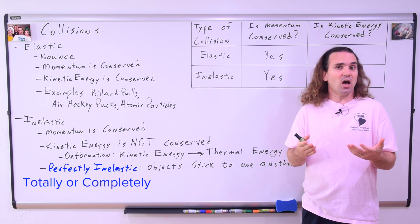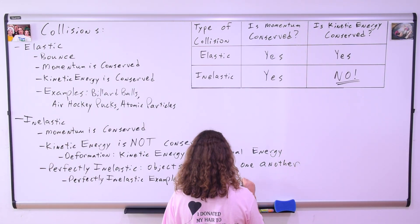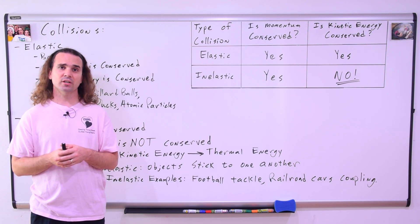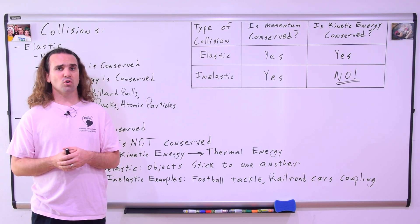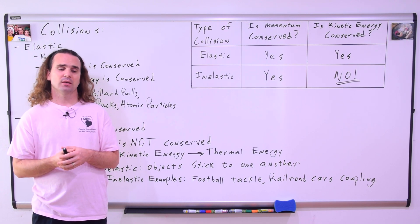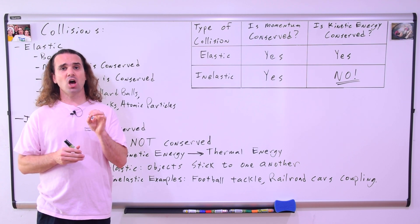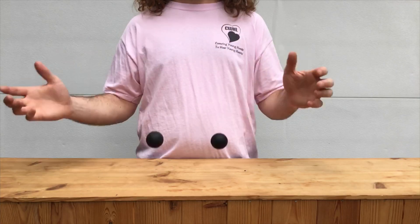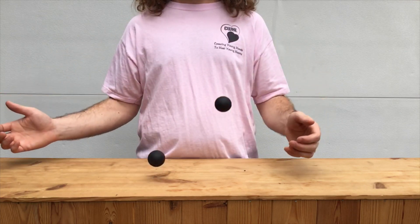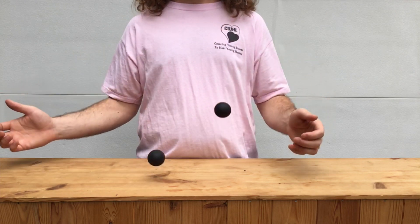So, some examples of perfectly inelastic collisions are two football players colliding and holding onto one another or a tackle, or two railroad cars running into one another and coupling. Okay, so now let's take a look at a demonstration of some collisions. When I drop these two balls from the same height, the one on your right bounces much higher than the one on your left. Bo,